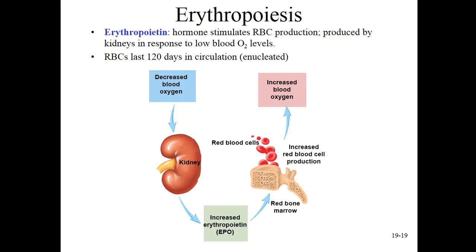If our blood oxygen is low, we want to make more blood cells. Red blood cell formation is erythropoiesis. The kidney detects low blood oxygen and releases a hormone called EPO — this is what Lance Armstrong was doping with to artificially increase his red blood cell count. In normal circumstances, EPO stimulates bone marrow to produce more red blood cells to increase blood oxygen. This process takes time, which is why people summiting Mount Everest have to spend time at altitude so their red blood cell count slowly rises.